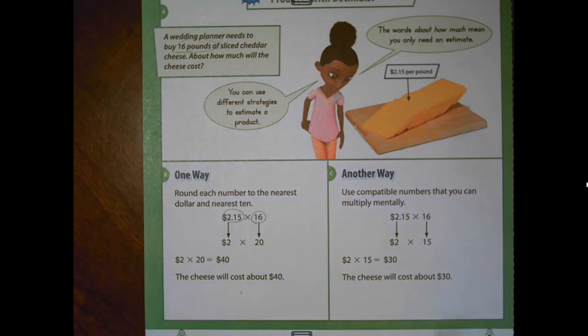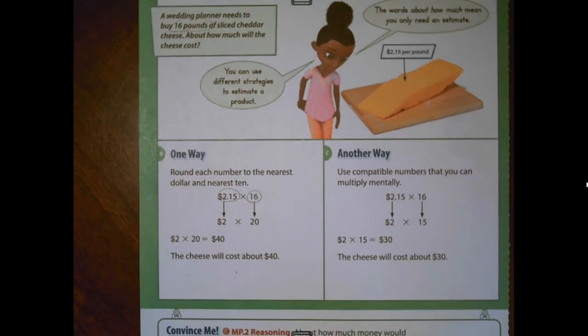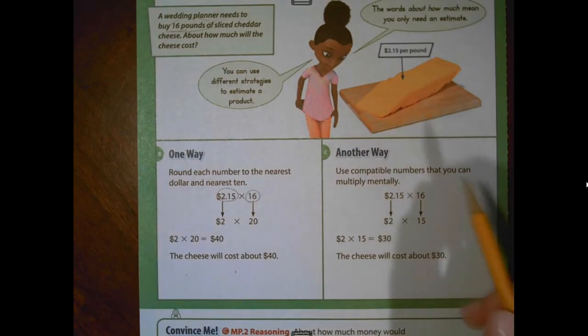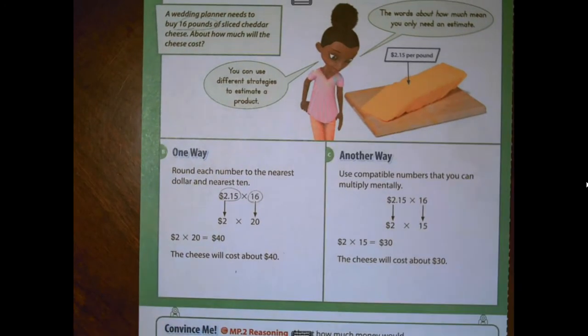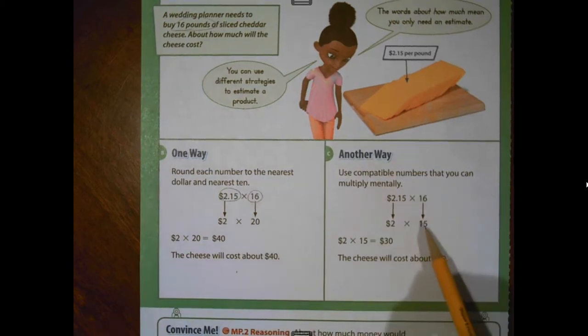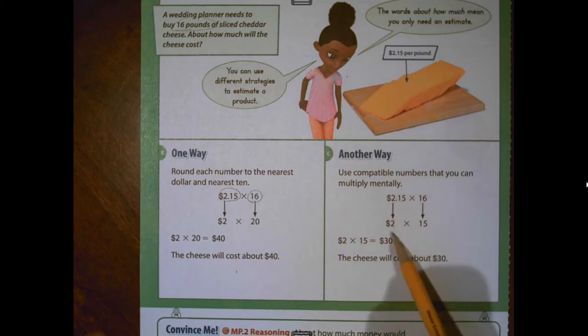Another way is to use those compatible numbers. So we could think about some numbers that we know that are even closer than the rounded numbers. So some of you are really good at counting by 15s. So if you're good at counting by 15 mentally, then why don't you make 16, 15? That keeps your estimated factor a lot closer to the actual factor. And then $2.15, we're going to round it to $2 and use the compatible numbers $2 times 15. And 2 times 15 is 30, so we get $2 times 15 equals $30. So with using compatible numbers, the estimate will be $30.